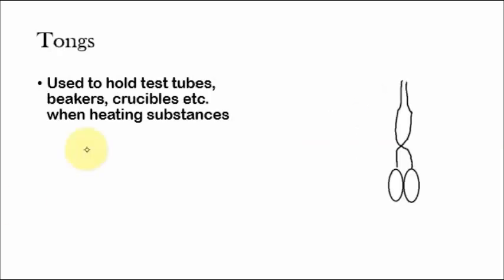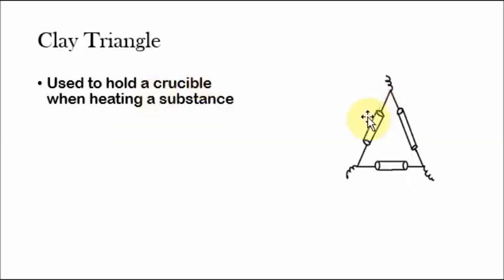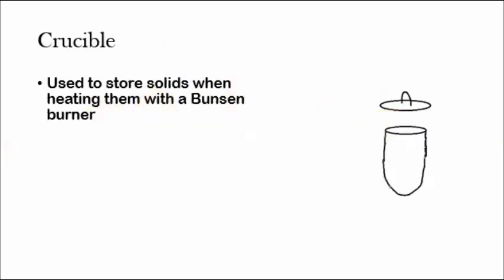Tongs. Tongs can be used to hold test tubes, beakers, crucibles when heating substances. So you could either use a clay triangle when heating your crucible or you can just use tongs.